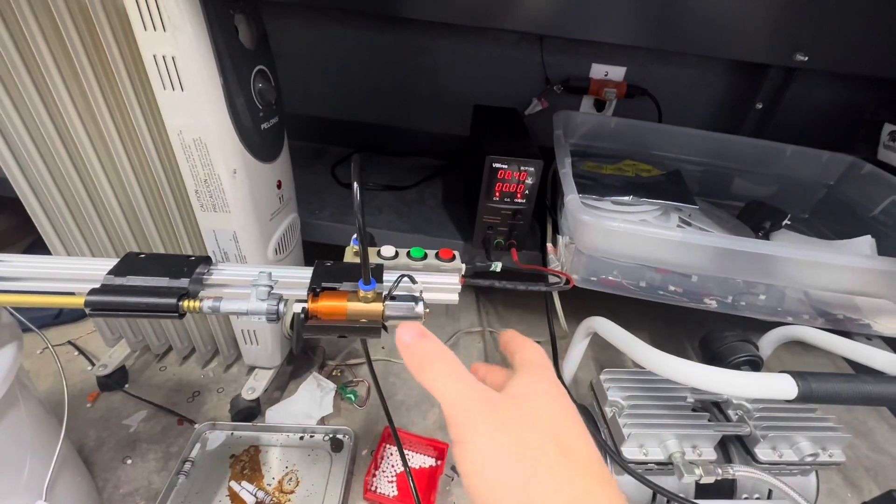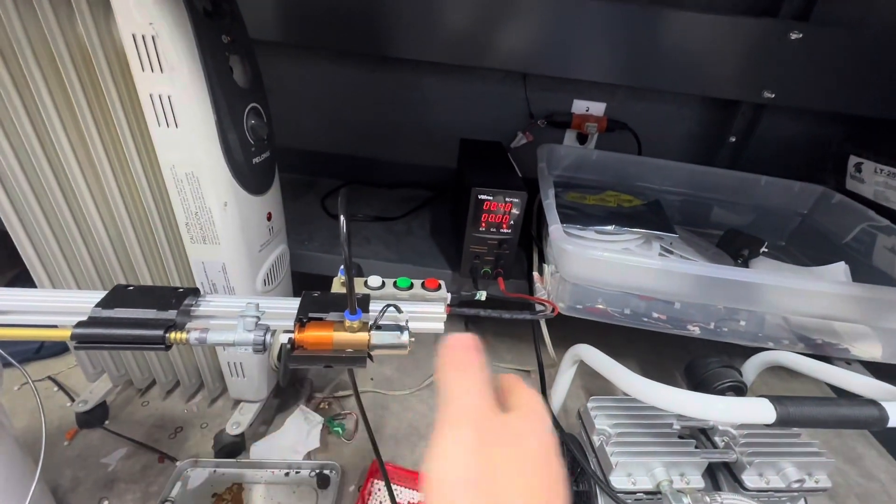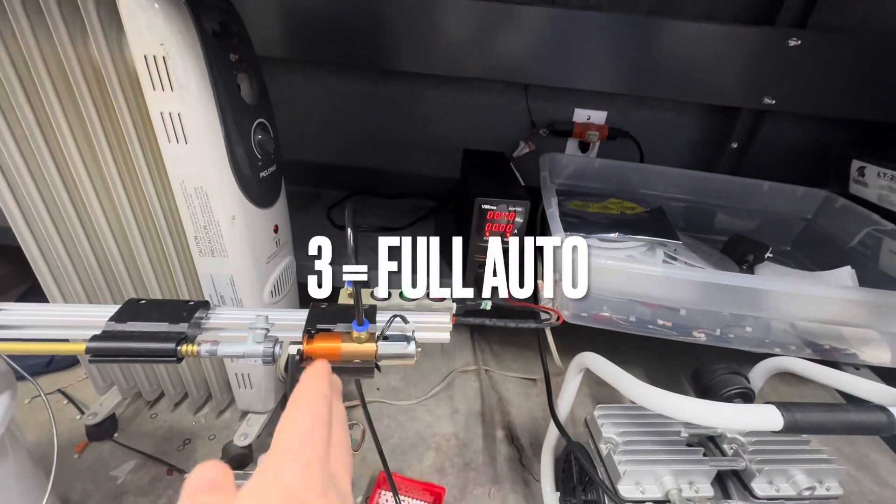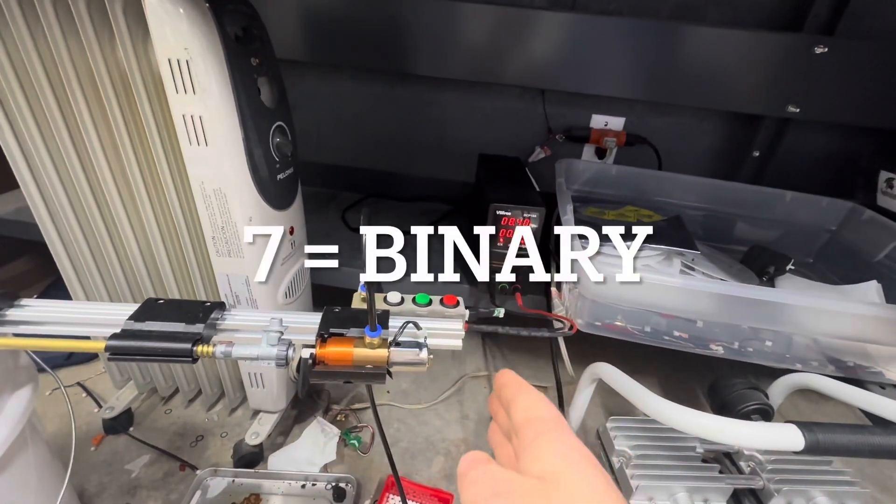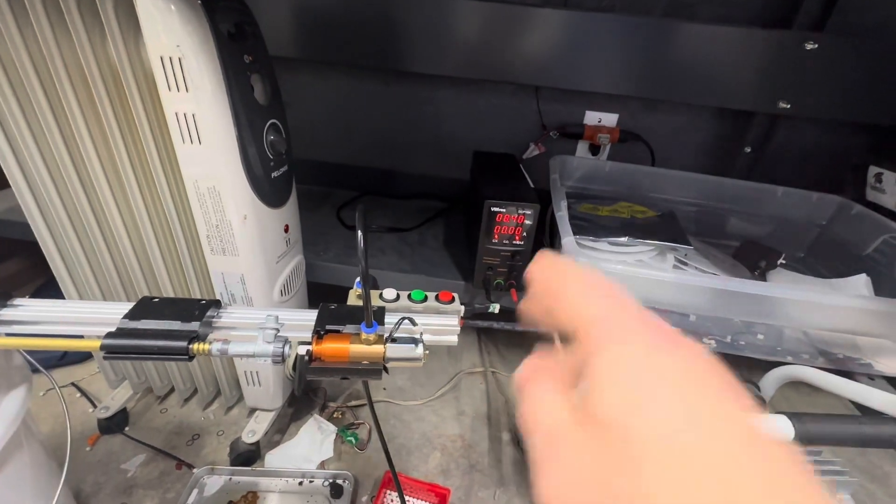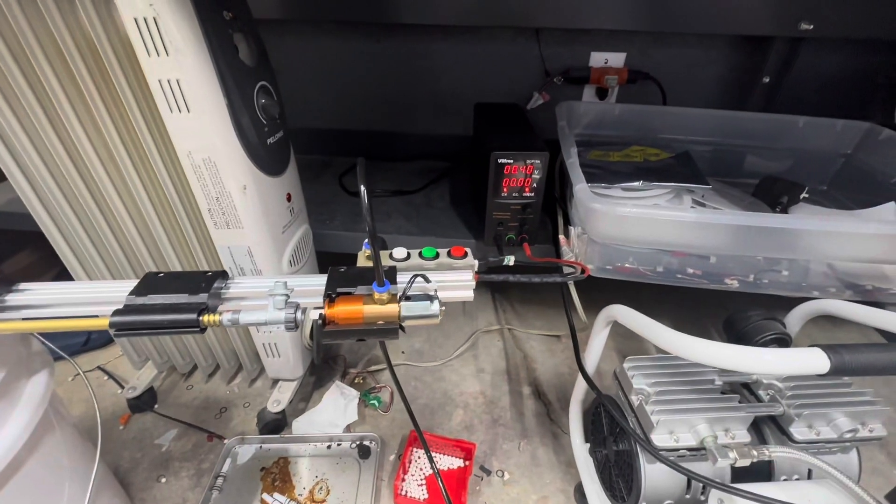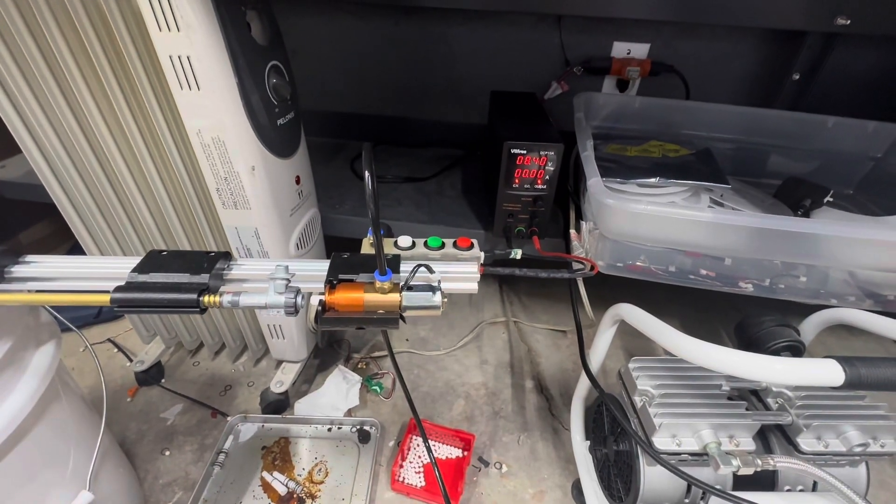So the easiest way that I can think to remember it is the most shots per trigger pull is the shortest amount of time that you hold the selector switch. So three seconds for full-auto, five seconds for three-round burst, seven seconds for two shots with binary, and nine seconds for one shot with semi-locking. That's the easiest way that I can think to remember it, and that is essentially how you tune the FCU and program it for different fire modes.